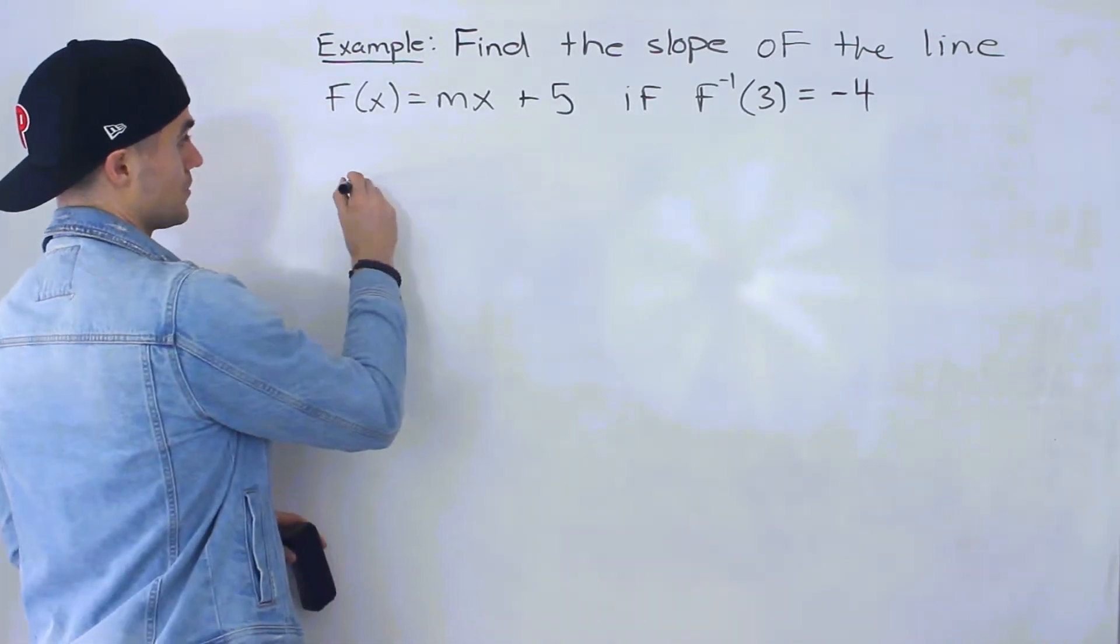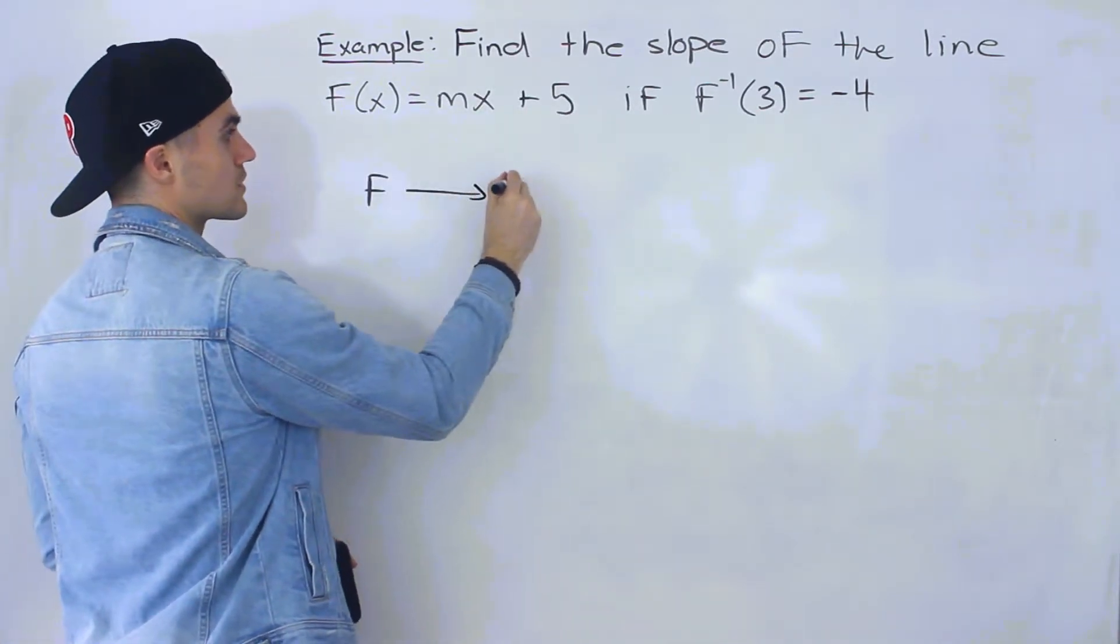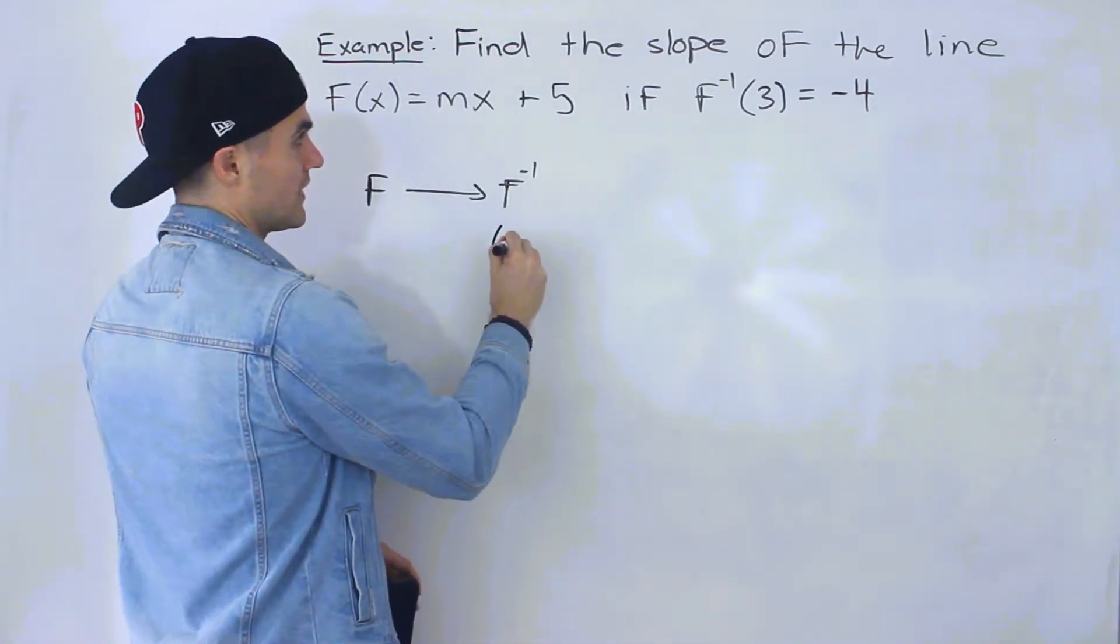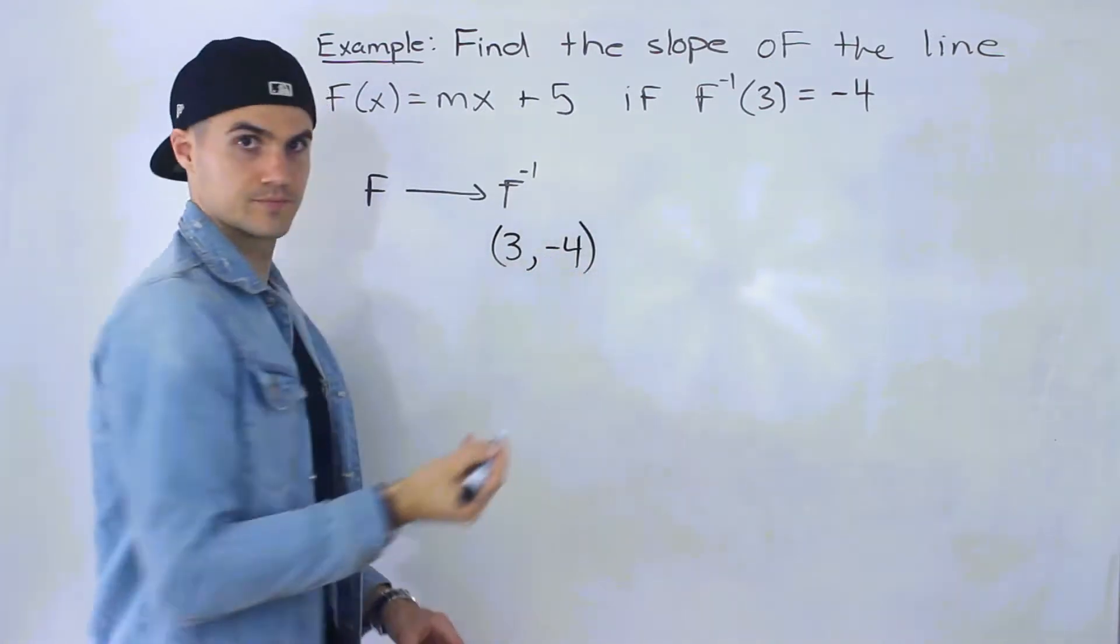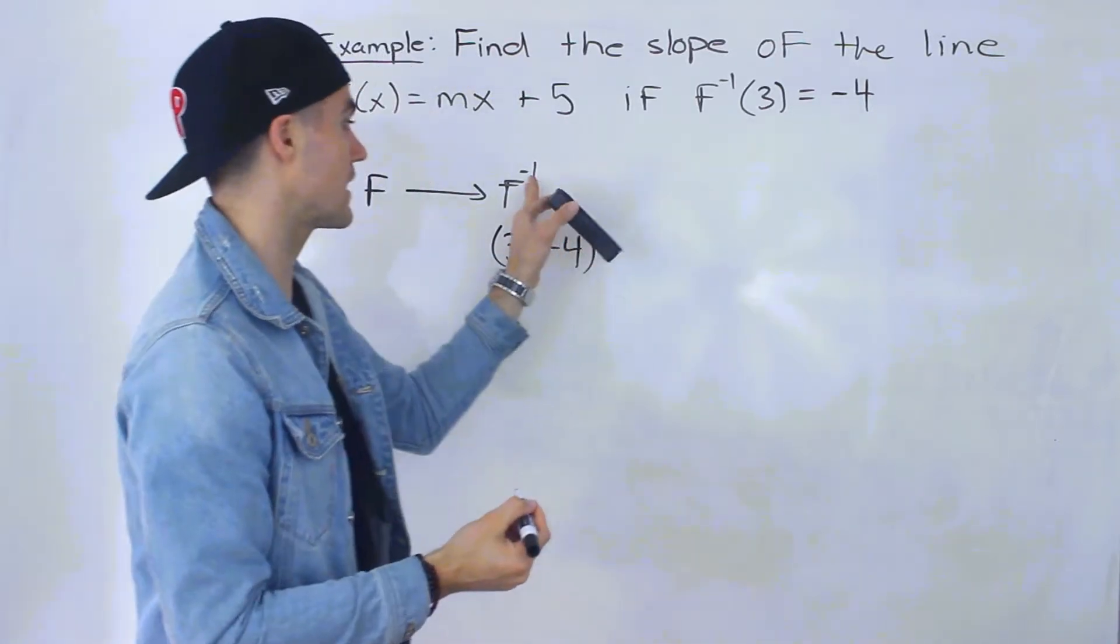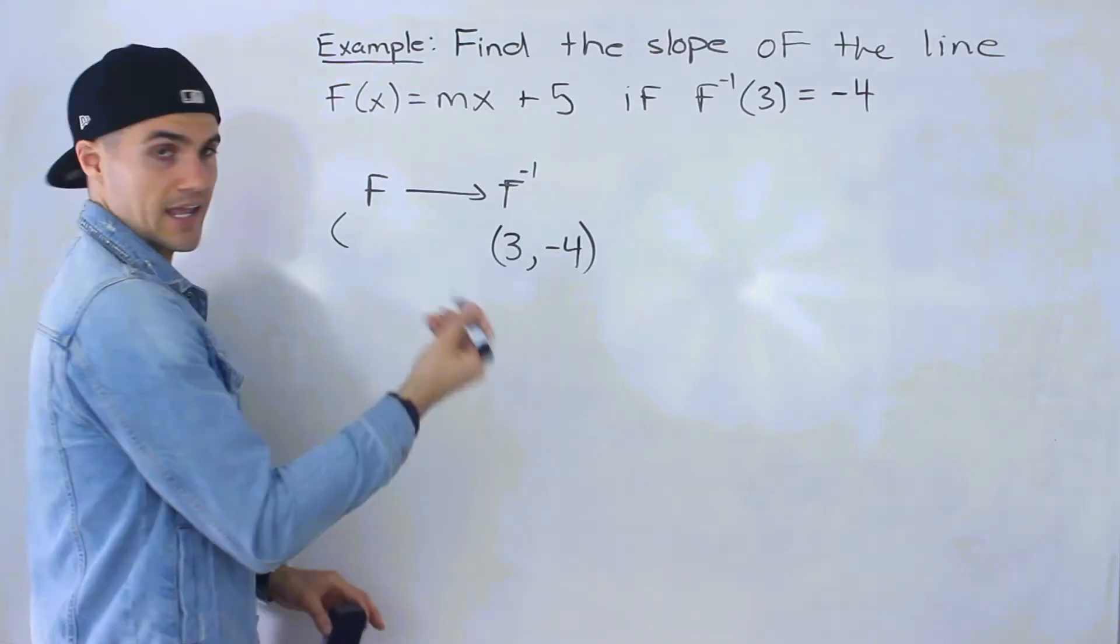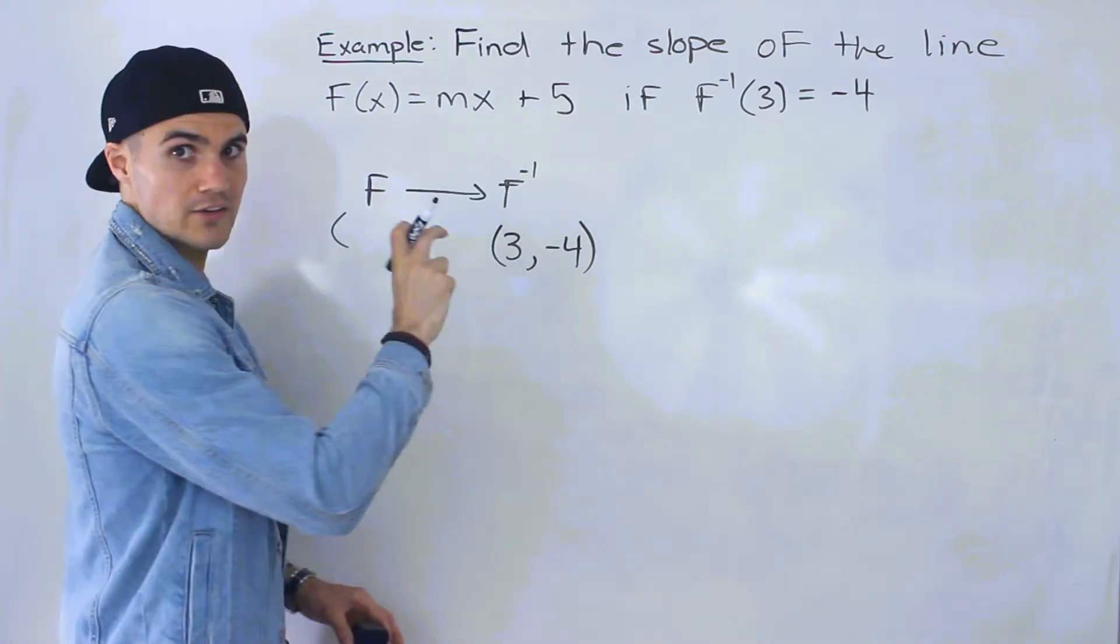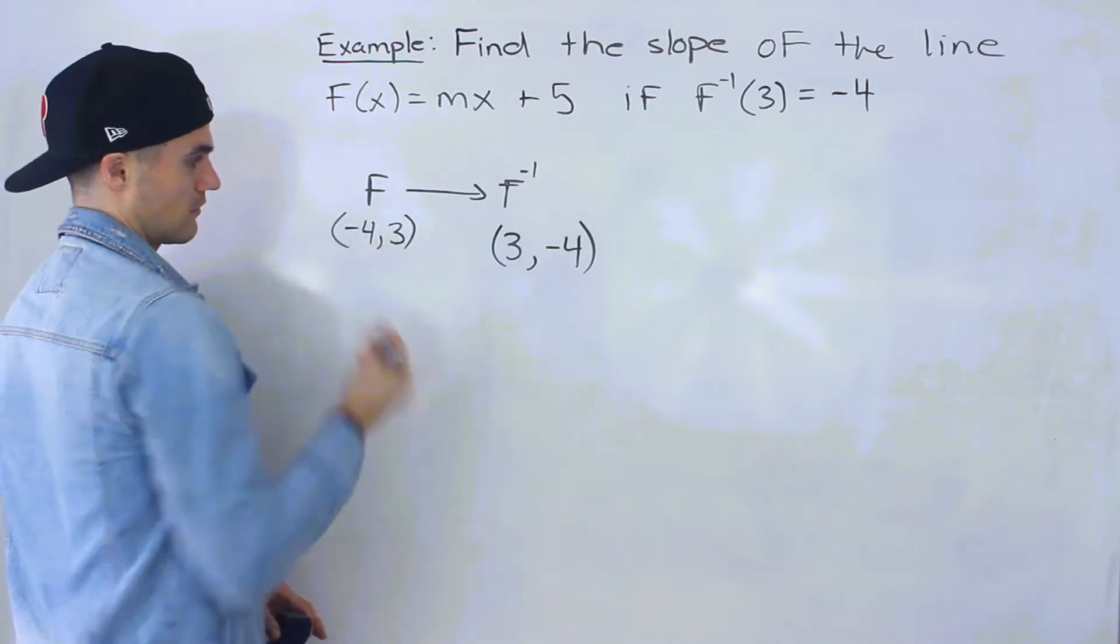What we can notice is we have our function, which is this, and then we have our inverse. So notice that with the inverse, we're given the coordinate (3, -4). The x value is 3, the y value is negative 4. This is for the inverse, which means for the function, it's going to contain the point with these x and y values interchanged. So this function is going to contain the point (-4, 3).